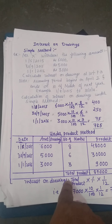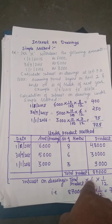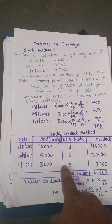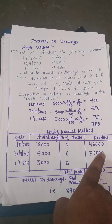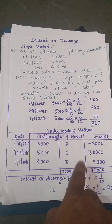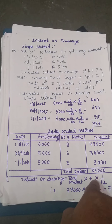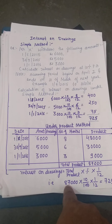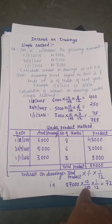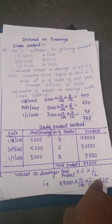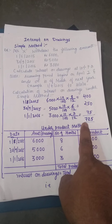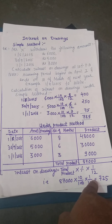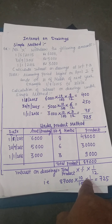Interest on drawings = Total product × rate% × 1/12. The drawings have been converted into months, so we divide by 12 to bring it back to a yearly basis. Interest = 87,000 × 10% × 1/12 = Rs. 725. Under this method also the answer is Rs. 725. Both methods give the same result, so you can decide for yourself which method is easier for you.